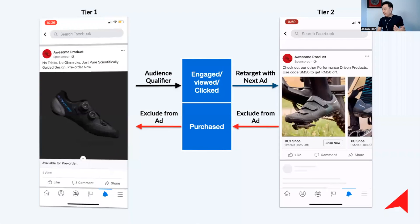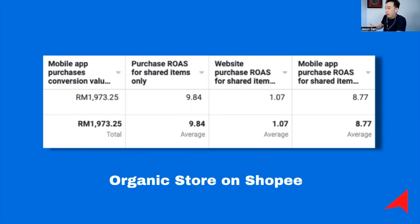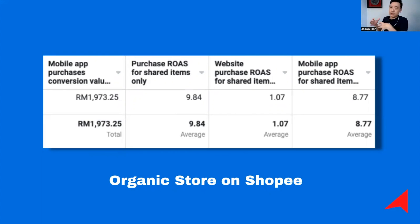Here are a few examples. First, an organic store on Shopee — a marketplace in Malaysia and Southeast Asia. The Tier 1 top-of-funnel campaign was doing about 2 ROAS, which is not really making money. But when Tier 2 came in, it balanced up to about 4 to 5 overall ROAS.